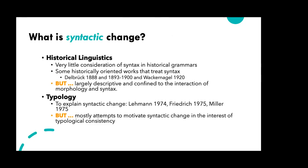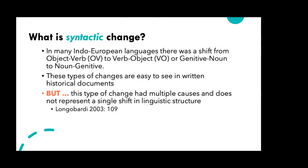An important question I have been grappling with is how to identify syntactic change. There is very little consideration of syntax in historical grammars. Some historically oriented works treat syntax, but these are largely descriptive and confined to the interaction of morphology and syntax. Typologists have tried to explain syntactic change, but mostly these are attempts to motivate it in the interest of typological consistency. In Europe you can see word order changes — shifts from object-verb to verb-object, or genitive-noun to noun-genitive — but as Longobardi pointed out in 2003, this type of change had multiple causes and doesn't represent a single shift in linguistic structure.